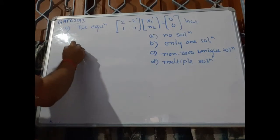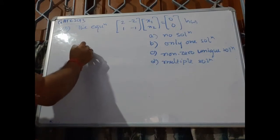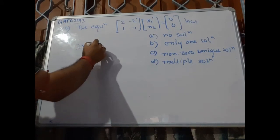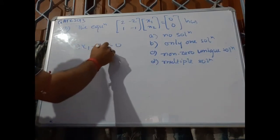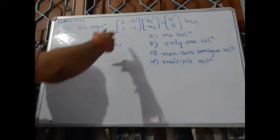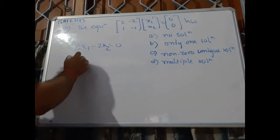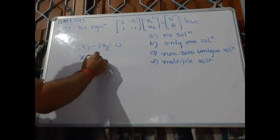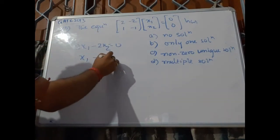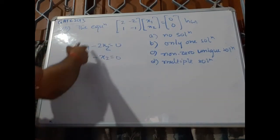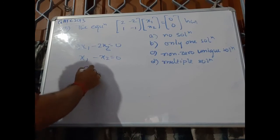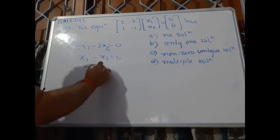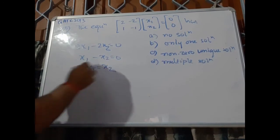If I multiply this out, we have 2x1 minus 2x2 equals 0, and x1 minus x2 equals 0. From both equations, we can calculate that x1 equals x2.